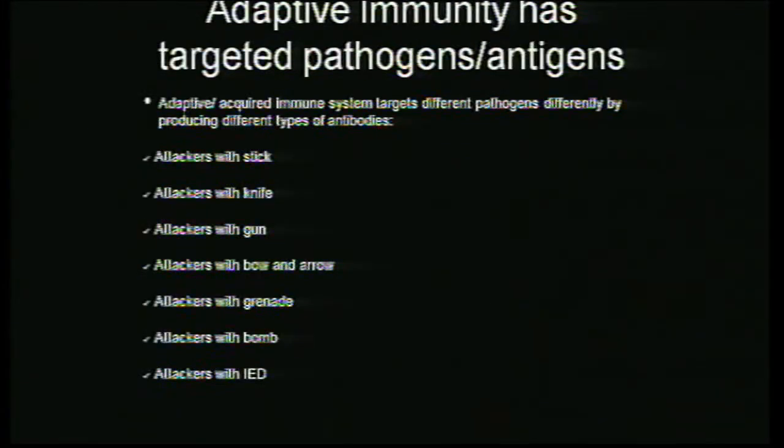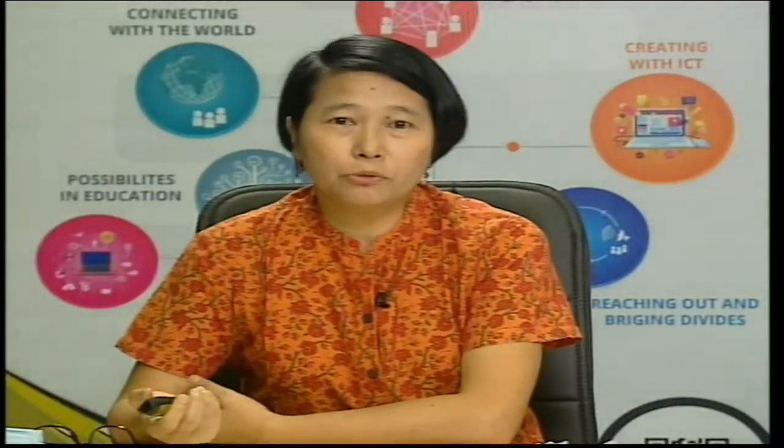So what is immunity? Immunity is defined as the body's ability to protect itself from infectious diseases. When you're immune to a disease, your immune system can fight off infections from it. When you have an infection, your body doesn't sit idle — it does something to prevent or attack the pathogen. Whether you have a strong immunity or a poor immunity depends upon the condition of your health.